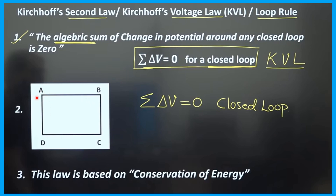Consider this closed loop A, B, C, D. The potential difference across any two points is not the same — it will be different. The potential difference across AB, BC, CD, and DA are all different. If you add all the potential differences, the net total will be zero. This is valid for a closed loop.